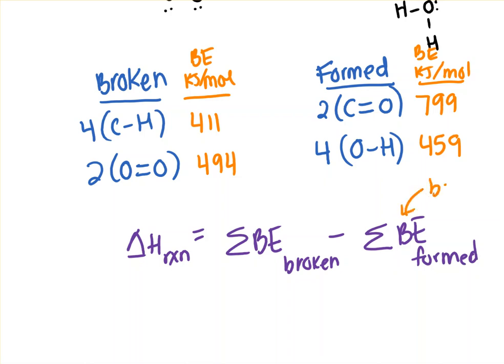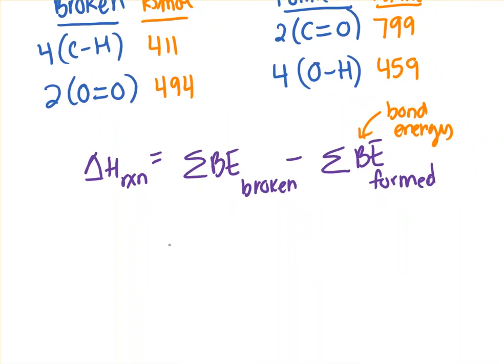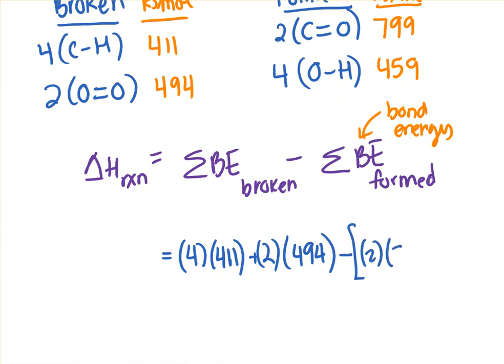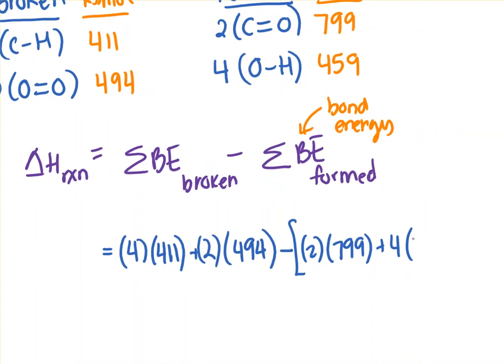And again, this is bond energy. So I'm just going to plug in these numbers up here, four times 411. And I'll put my units out here that this is going to be in kilojoules. The mole is canceled by the coefficient that is on these. And I get a heat of reaction of negative 802 kilojoules.